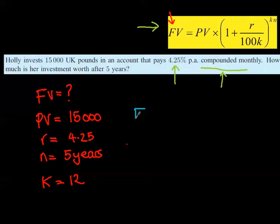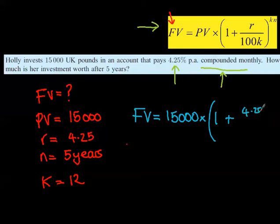So the future value, her return, basically how much she's going to get in five years' time, is equal to £15,000 times, big bracket, 1 plus, inside the bracket, it's 4.25% over 100. And that's not 100K, it's 100 times K, which is 12, to the power of 12 times 5. So this is what you have to calculate.